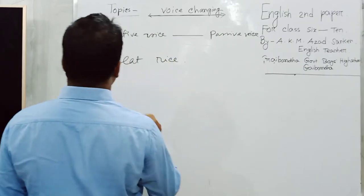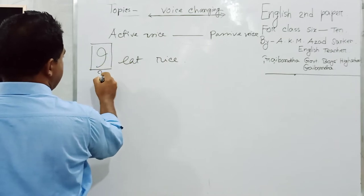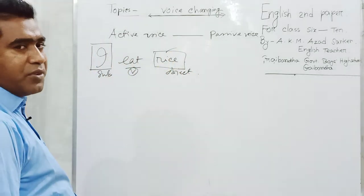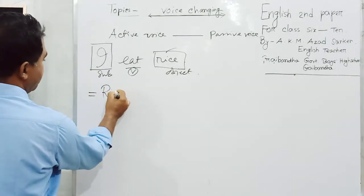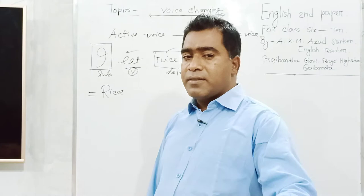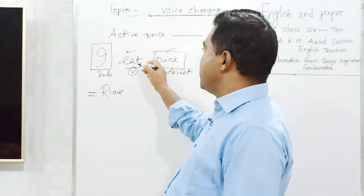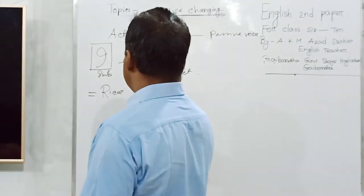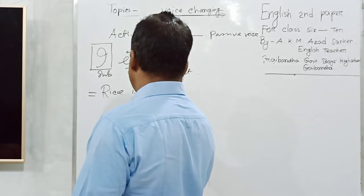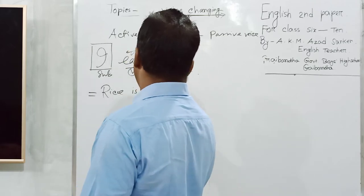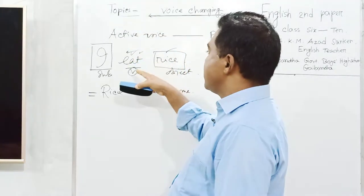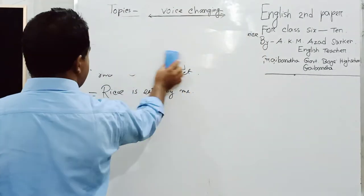Here you should remember: this is subject, this is verb, and this is object. Object must be subject. Then you must use the be-verb according to the tense. This is present indefinite tense. We should think about the sense of active and passive, that you should try to write down active and passive.